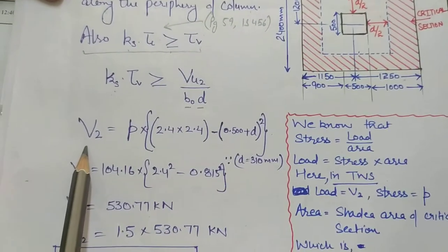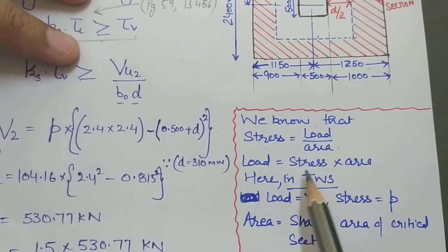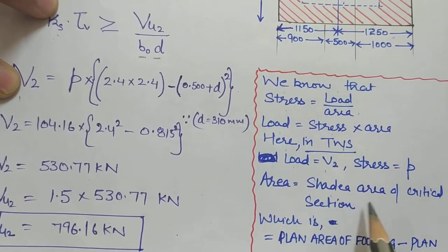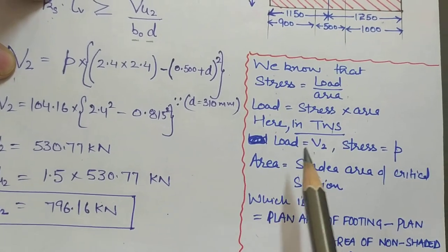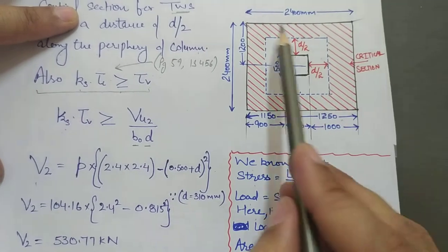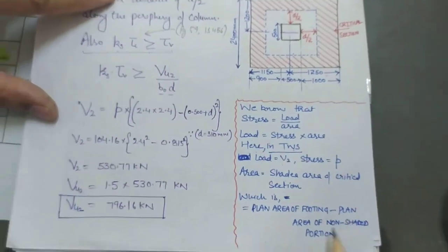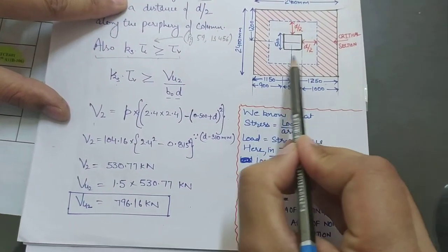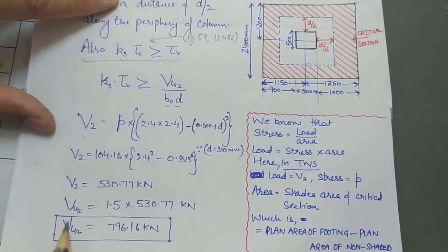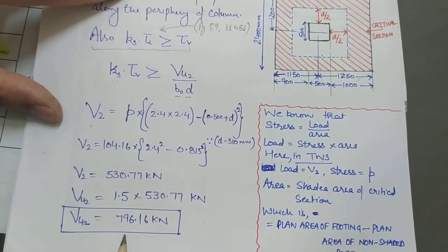To calculate VU2, we use load = stress × area. The shaded area equals the total plan area of the footing minus the plan area of the non-shaded portion (the critical perimeter zone). V2 = 570.77 kN, so VU2 = 570.77 × 1.5 = 796.16 kN.